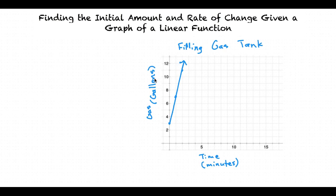What is the initial amount of gas according to the graph? It looks like the initial amount of gas is three gallons, because the y-intercept is at three gallons, which is the amount at zero minutes. Very good.